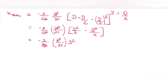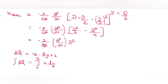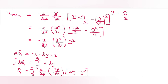To find the average velocity, we first find the discharge. Considering a small strip of thickness dy, dQ = u·dy·1. Integrating from 0 to D: Q = ∫₀ᴰ (1/2μ)(−∂P/∂x)(Dy − y²)dy. Integration gives D·(y²/2) − (y³/3), evaluated from 0 to D.